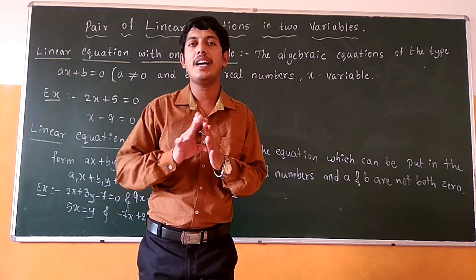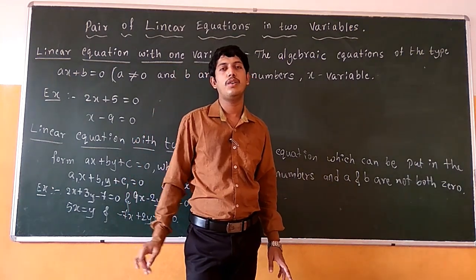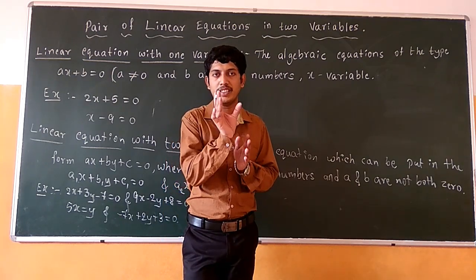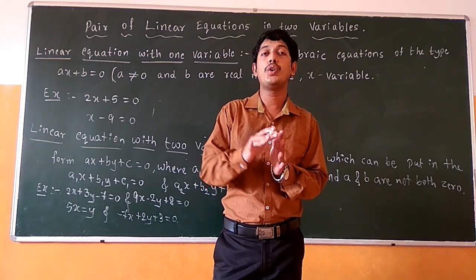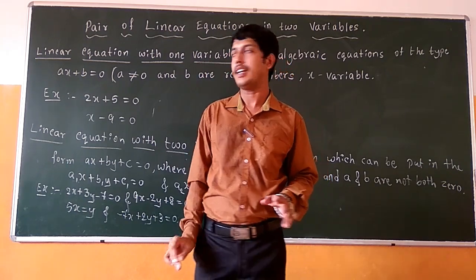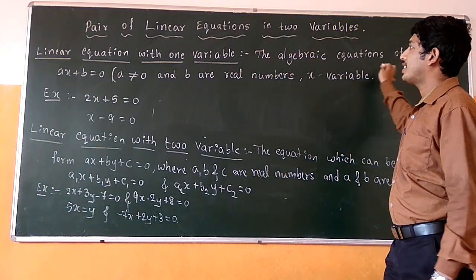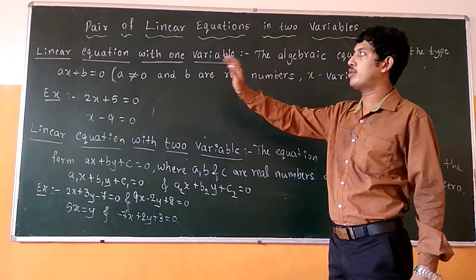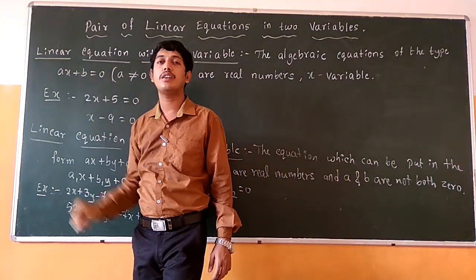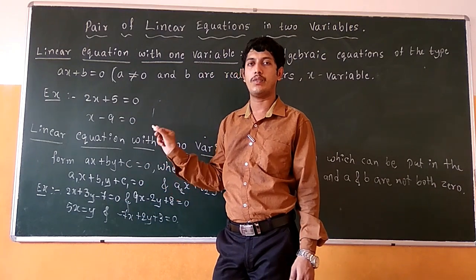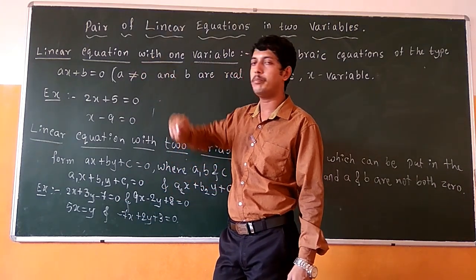So a and b are your constant terms and x is the variable. If you consider ax, then a is the coefficient of x, or a is the coefficient of the variable x. The algebraic equation of the type ax plus b equals to 0 is the general form of the linear equation.